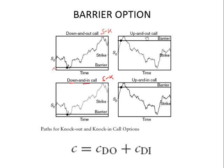Similarly, in an up-and-out call, the barrier is above the current spot price. As the spot price hits this upper barrier, the option extinguishes. In an up-and-in call, as the spot price hits the upper barrier, the option comes into existence, with a payoff at maturity of S minus K. However, if the barrier has not been hit, the call will not exist and there is no payoff at maturity.